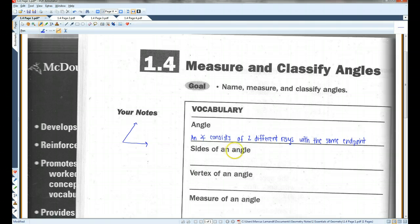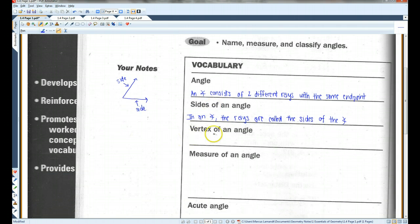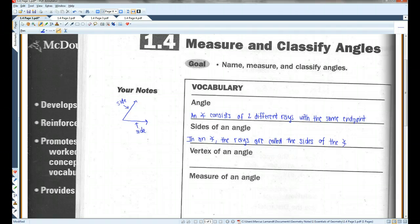Alright, the sides of an angle, these are the sides of the angle. This and this. In an angle, the rays are called the sides of the angle. Now, the corner is called the vertex. So, the end point that the two rays share, that is the vertex of the angle.